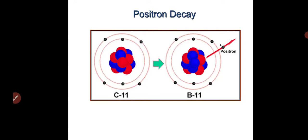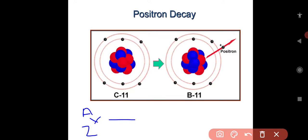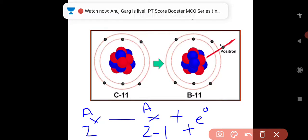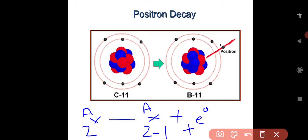From this case, A,X,Z becomes A,X, Z minus 1 plus positive charge. It is opposite of electron. Consider carbon-11, it undergoes beta plus decay, which gives boron-11 with the emission of positron.